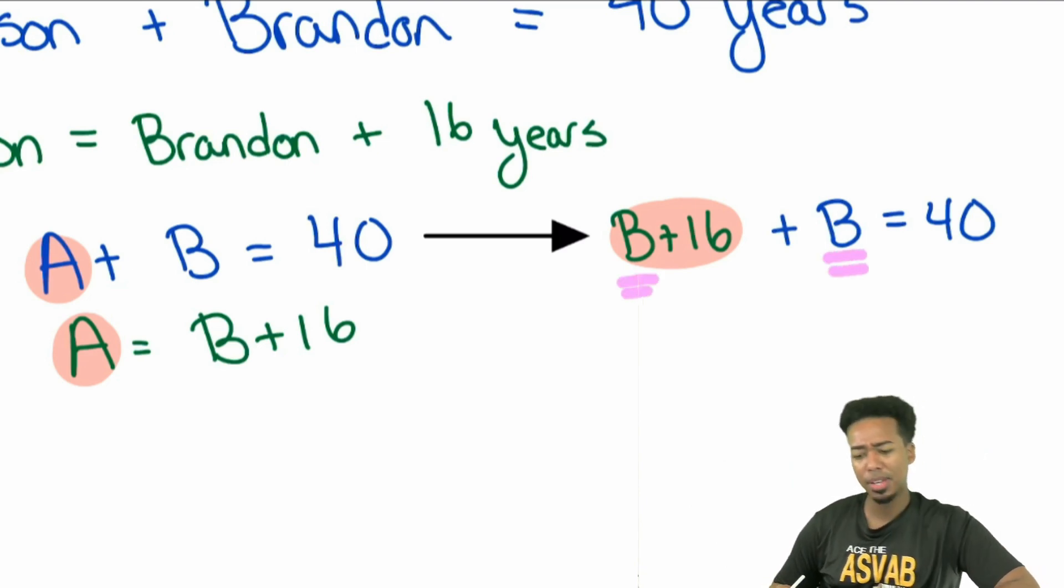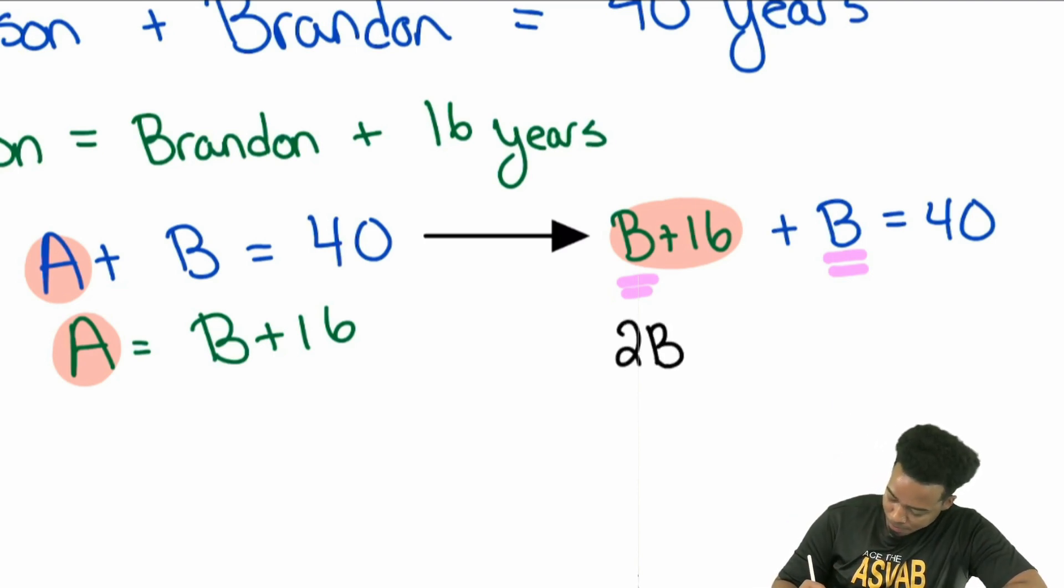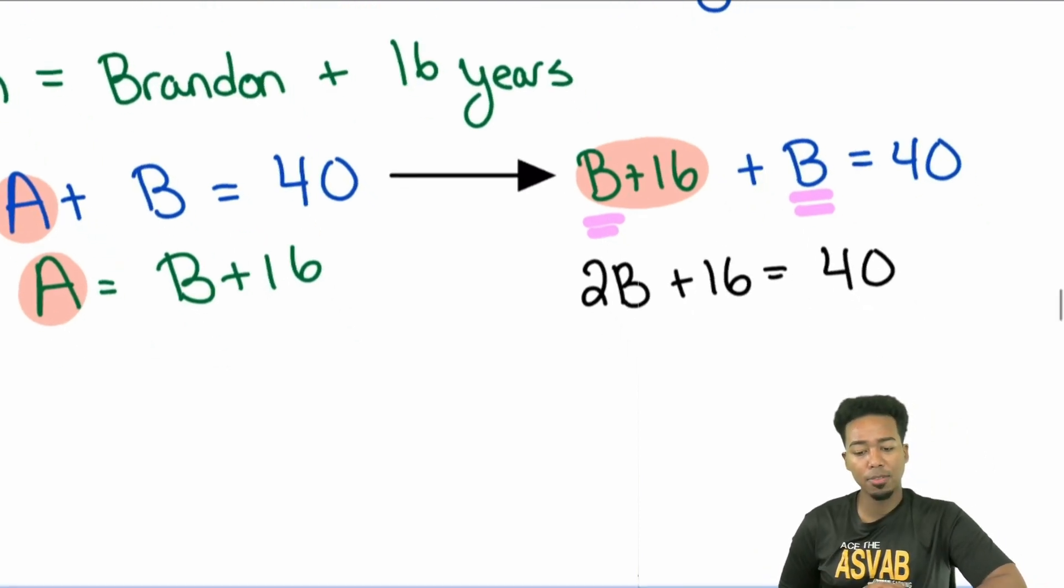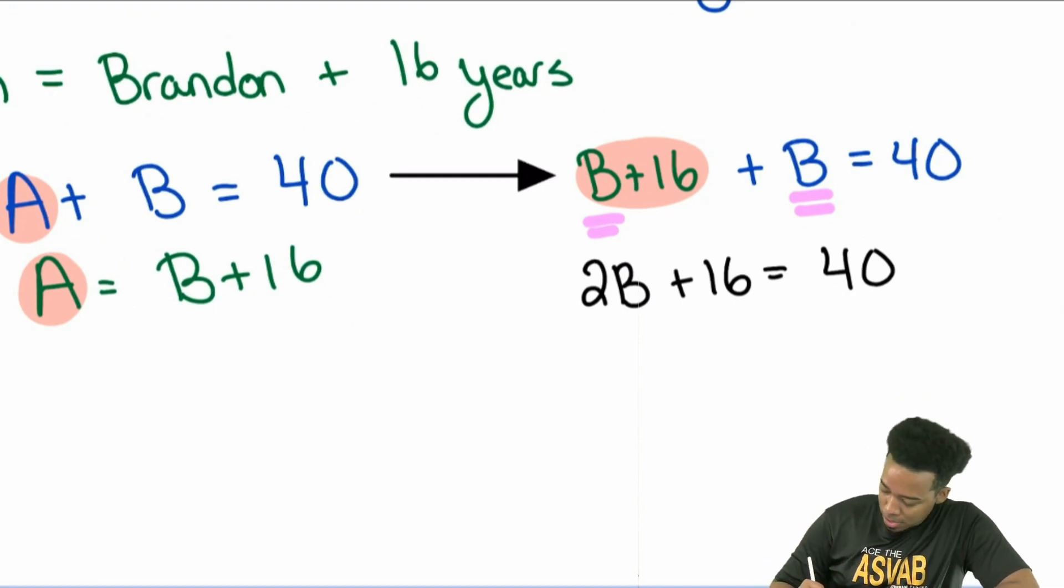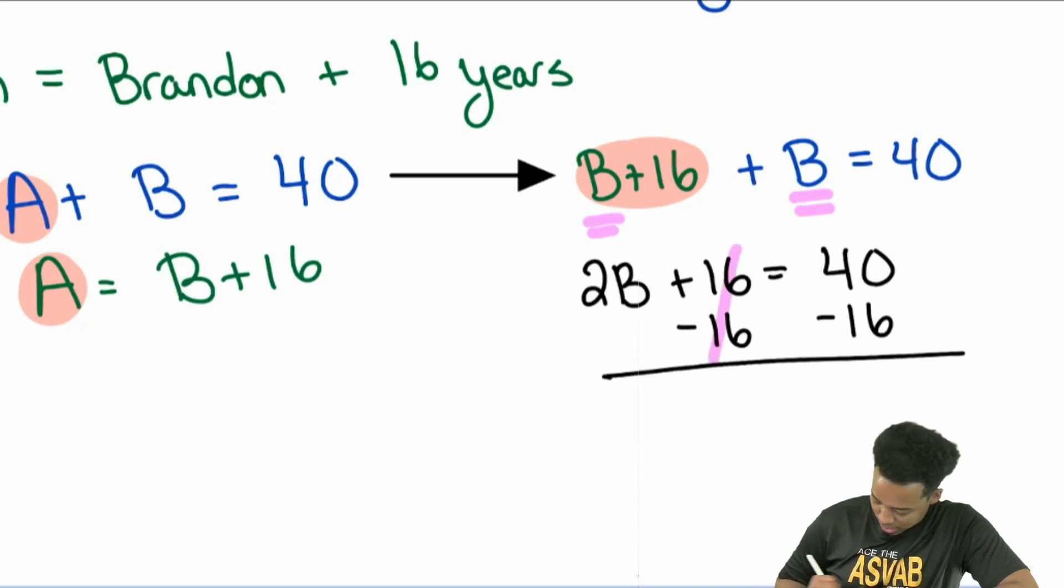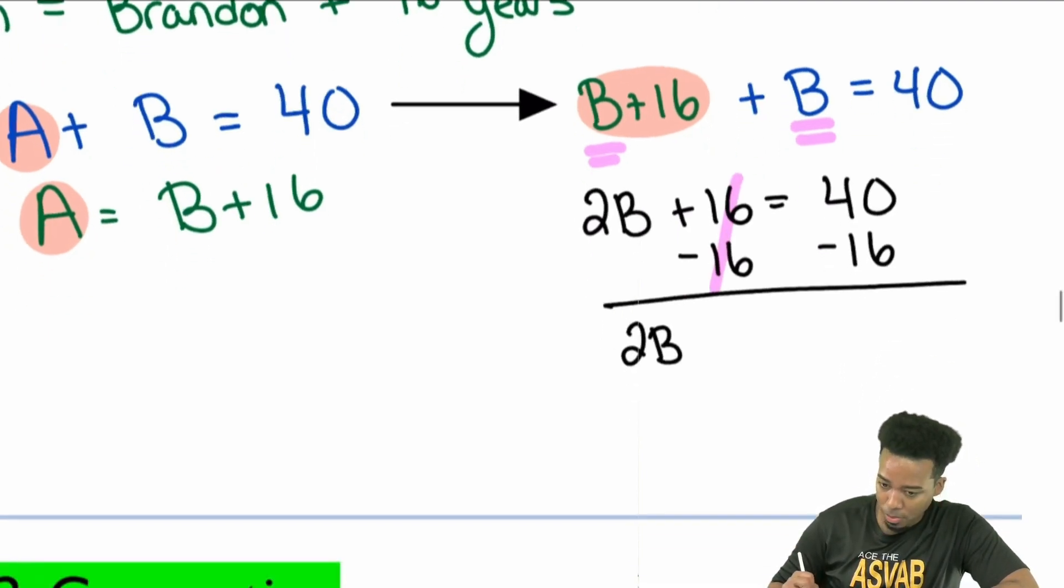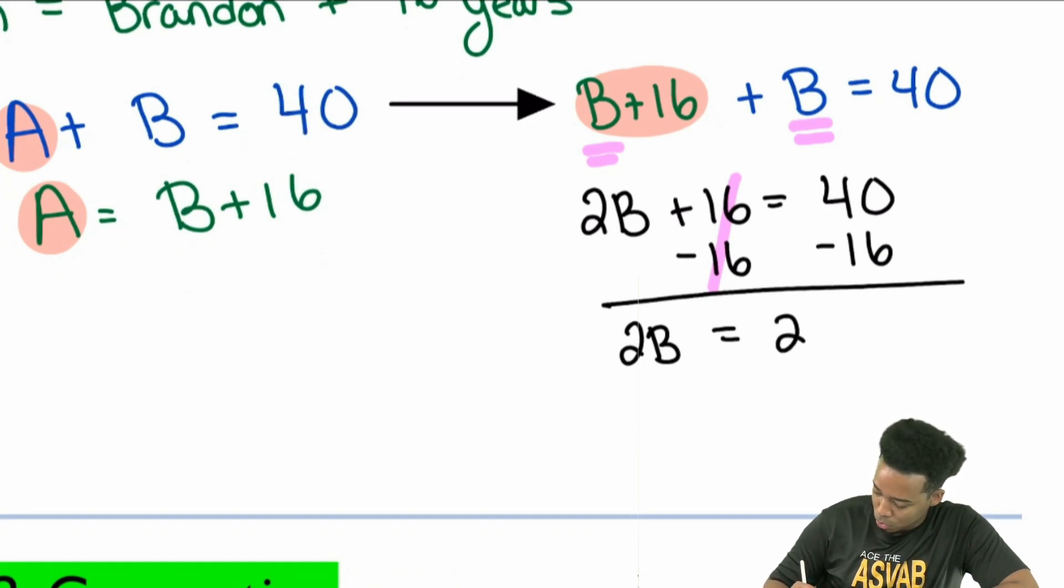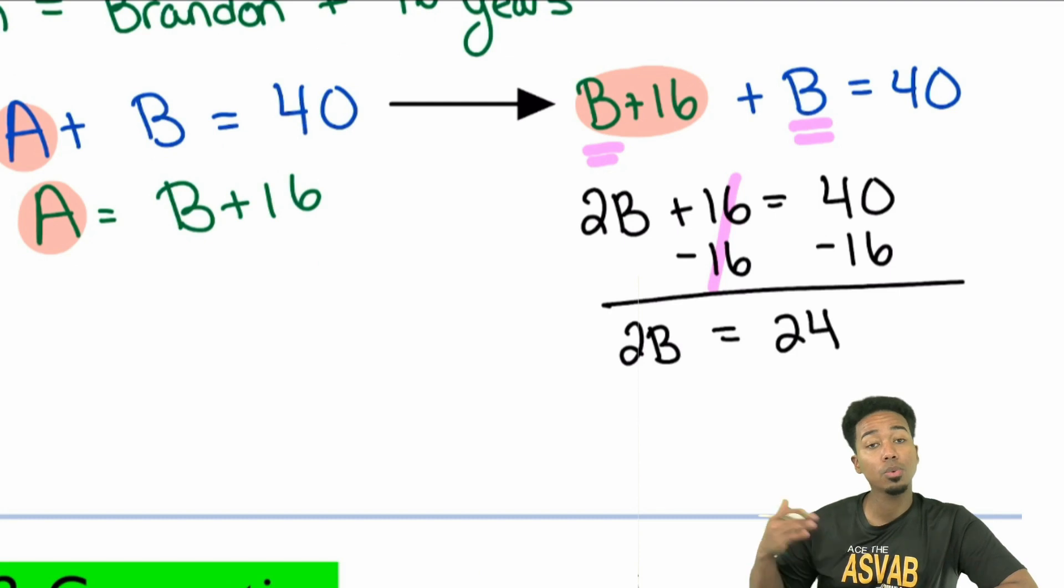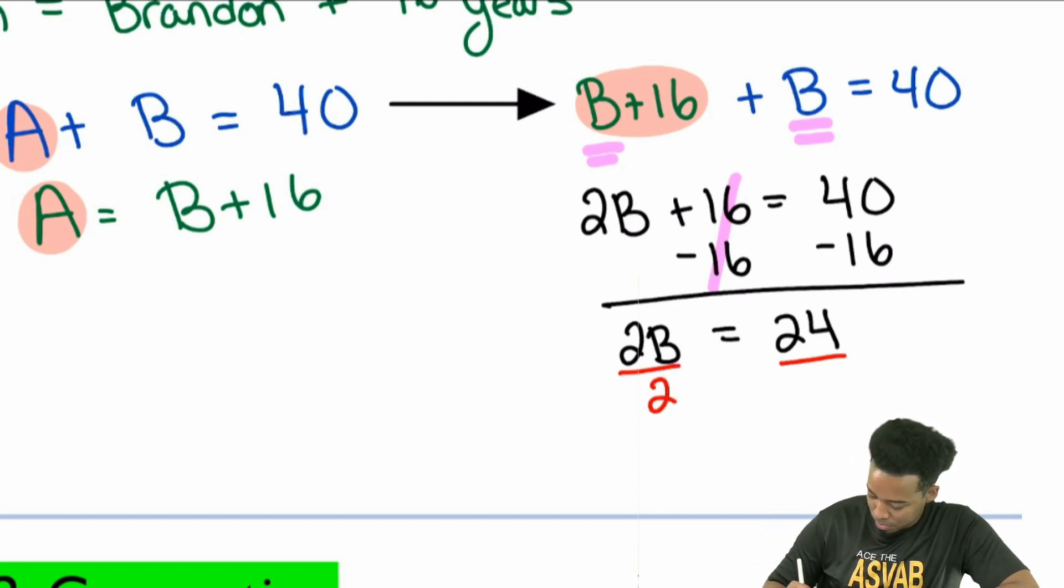But then again, B plus B, everybody. If I have a B plus a B, what do I get? B plus B is what? 2B. Yep, 2B. And so I have 2B and then plus 16 equals 40. And so with that, everybody, we're going to subtract 16. I'm going to take over a little bit here. We're going to subtract 16 on both sides. That's going to cancel out right there. And we have 2B. Let me zoom down just a little bit. 2B equals 24. And then from here, we'll divide both sides by 2. Right there. And we get B equals 12.